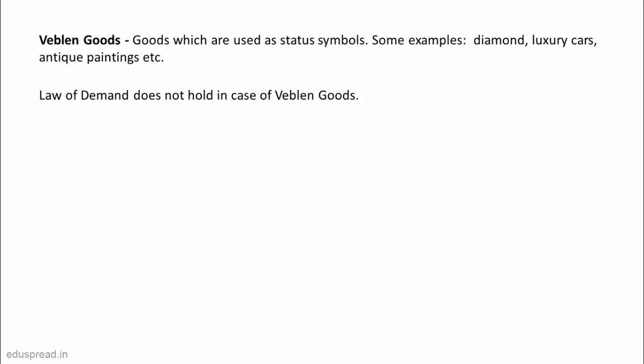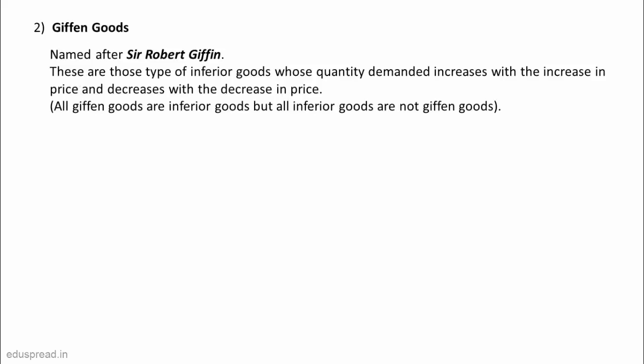The second exception to the Law of Demand is Giffen goods. Giffen goods were named after Sir Robert Giffen. Giffen goods are a type of inferior goods and the Law of Demand does not hold for them. The quantity demanded of a Giffen good increases with an increase in price and decreases with a decrease in price. It is important to note that all Giffen goods are inferior goods, but all inferior goods are not Giffen goods.